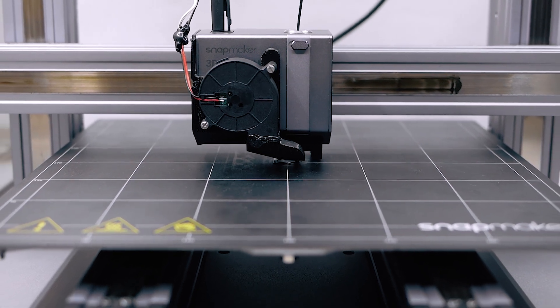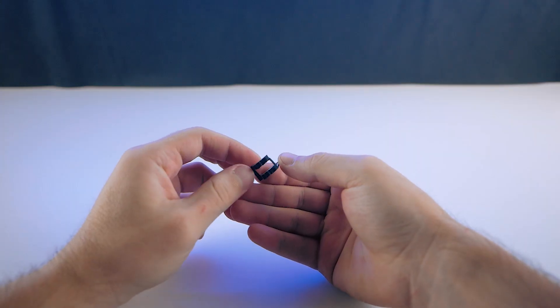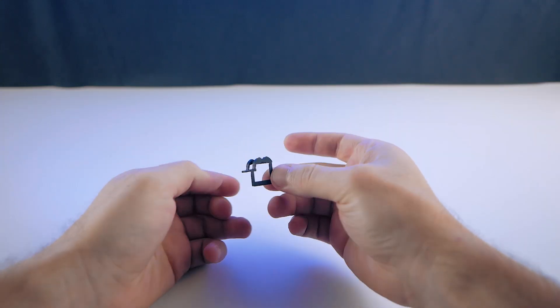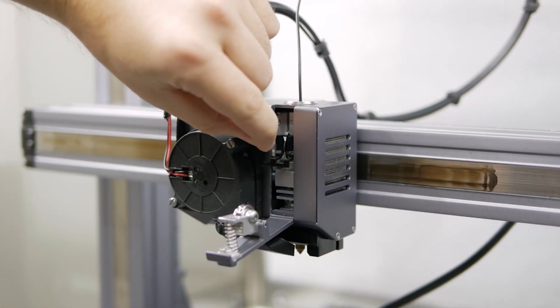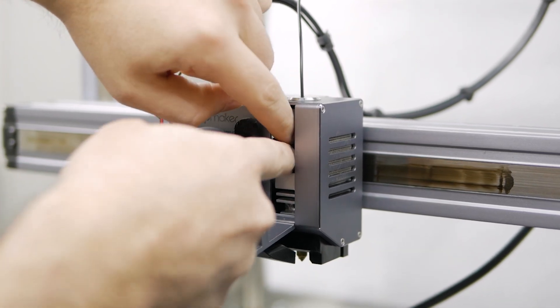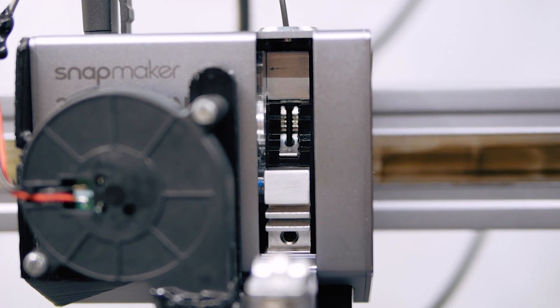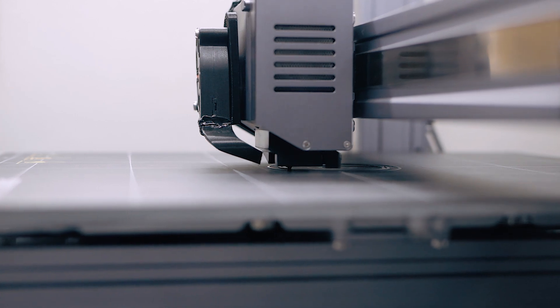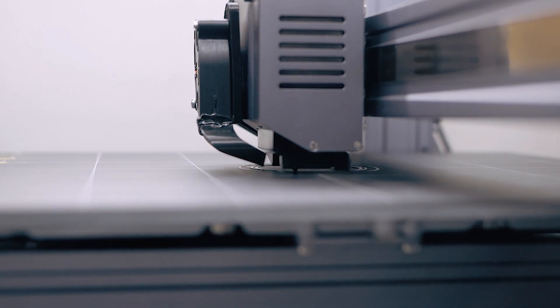I found also some information about printing with a TPU filament adapter for the extruder, which will fill gaps between filament and it won't bend anymore, but even this didn't help. All of my prints were starting and failing in about one or two minutes.